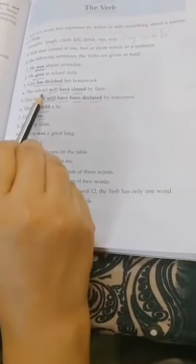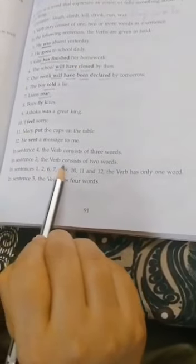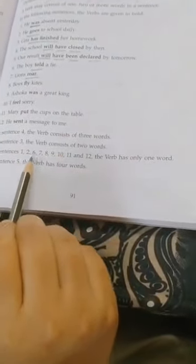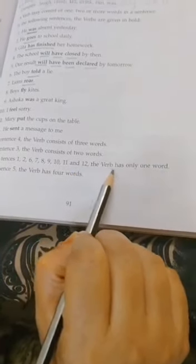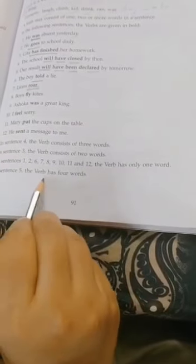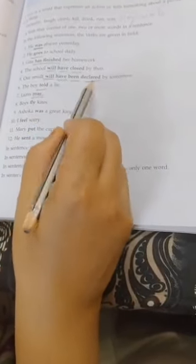Now see what is written here. In sentence four, the verb consists of three words. In sentence three, the verb consists of two words: 'has finished'. In sentences one, two, six, seven, nine, ten, eleven, and twelve, the verb has only one word. In sentence five, the verb has four words: 'will have been declared by tomorrow'.